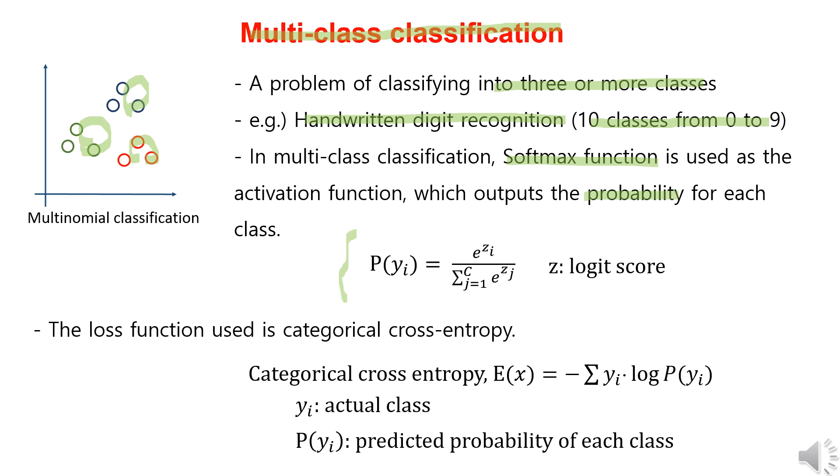This equation represents the softmax function, which takes the logits as input, transforms them using the exponential function, and then divides by the sum of all values to present them in the form of probabilities. Additionally, for multi-class classification, we use categorical cross-entropy as the loss function. For more details on this, please refer to the previous cross-entropy video.